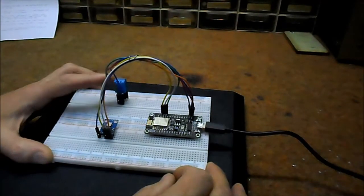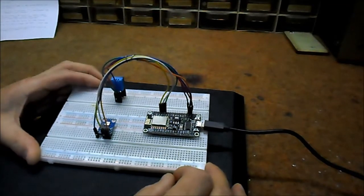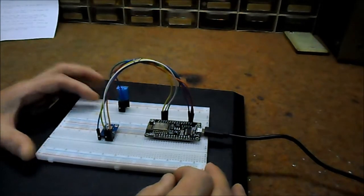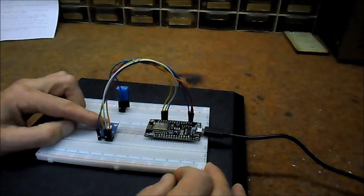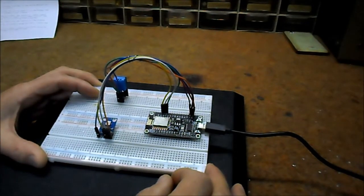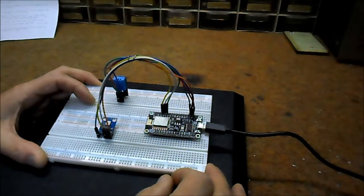DHT11 gives a very precise value of humidity and temperature and ensures high reliability and long-term stability. BMP180 is a barometric pressure sensor and it works with an I2C interface.